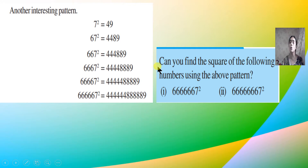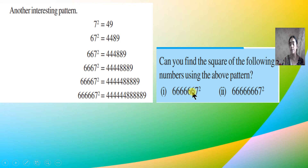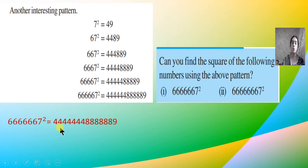Now applying the pattern: for the number with six 6s and one 7 — there are six 6s, so I write seven 4s, then six 8s, then one 9. Let's verify: 1, 2, 3, 4, 5, 6, 7 fours — correct; then 1, 2, 3, 4, 5, 6 eights and one 9. That is correct.